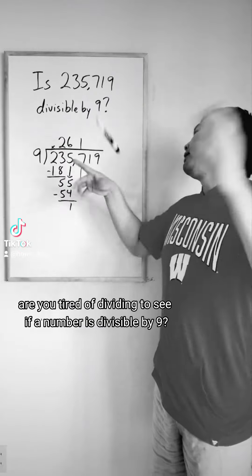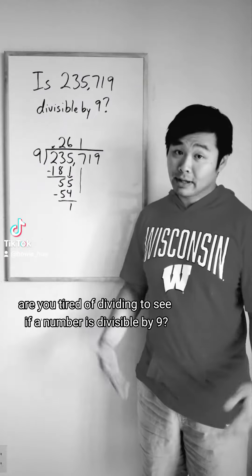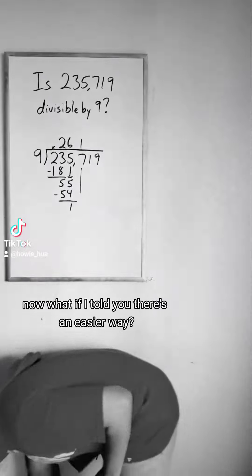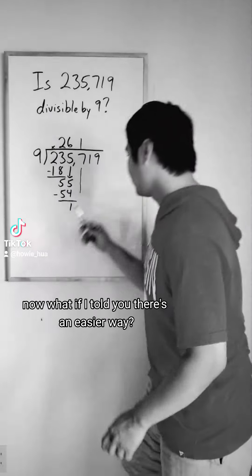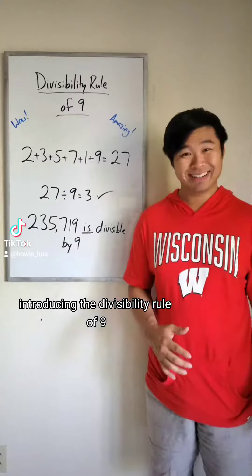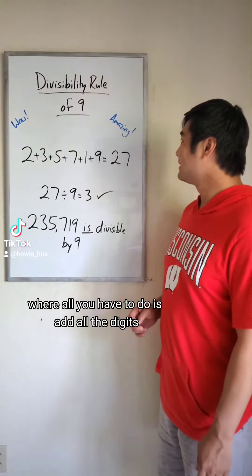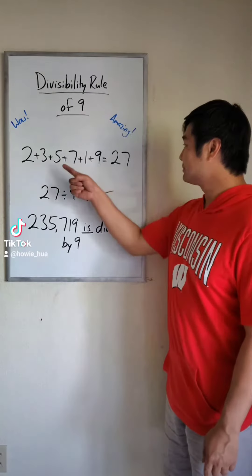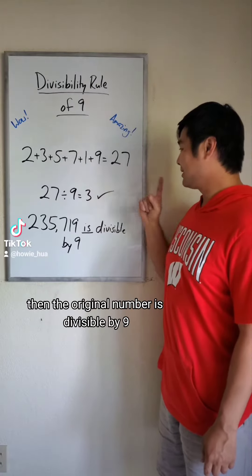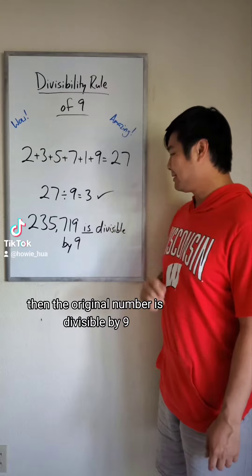Are you tired of dividing to see if a number is divisible by 9? What if I told you there's an easier way? Introducing the divisibility rule of 9, where all you have to do is add all the digits. And if the sum is a multiple of 9, then the original number is divisible by 9.